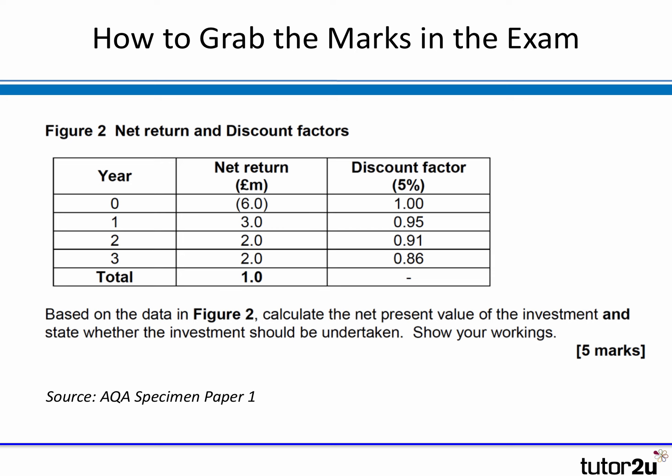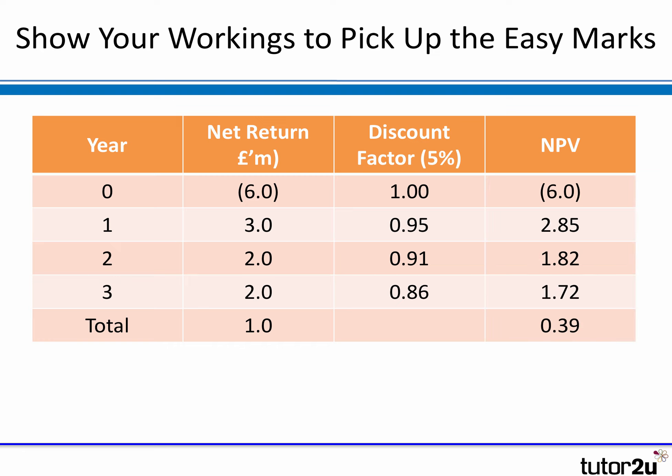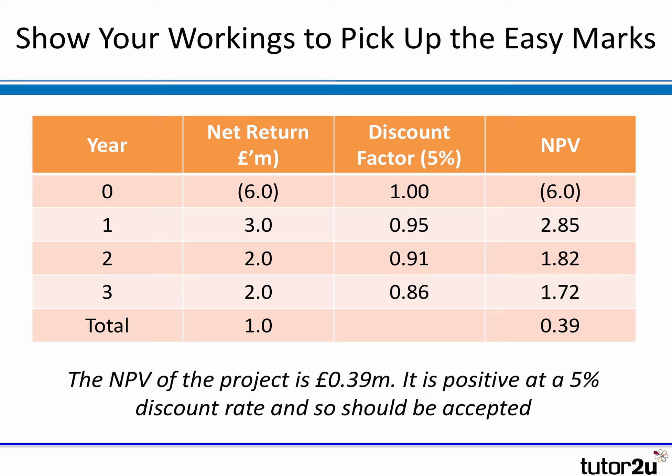The question asks you to calculate the net present value and state whether the investment should be undertaken. I've put the details into a user-friendly table — pause the video and calculate the present values and net present value. The answer: at time zero the outflow of six million is unchanged. Applying the discount factors across each row, in year three a net return of two million times 0.86 equals 1.72 million. Adding everything up gives a total of 0.39 million — that's 390,000 positive — so you should accept the project at a 5% discount rate.